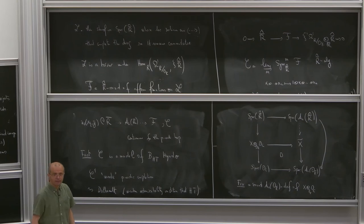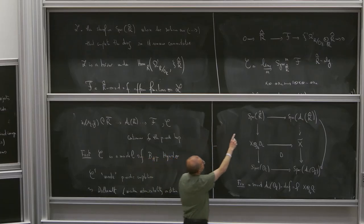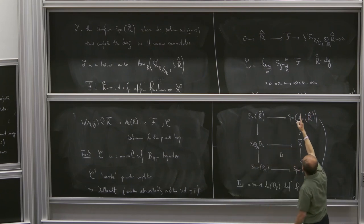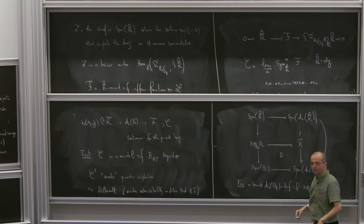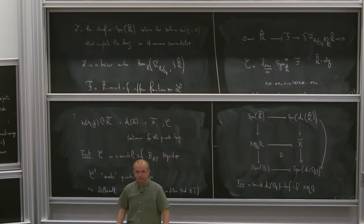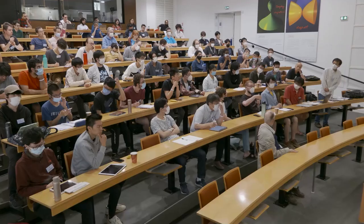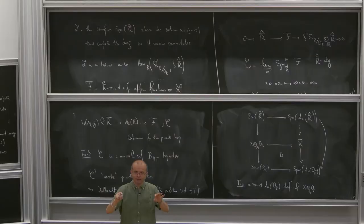Q: What does weak p-adic completion mean? A: The weak completion comes from the coordinates in some sense. If you split this extension it becomes like a polynomial algebra over the differentials, and the weak completion is relative to this coordinate. It's like replacing polynomials with power series converging to zero, but with some convergence conditions — not just converging to zero, more complicated, like the dagger construction à la Berthelot.